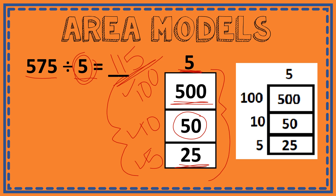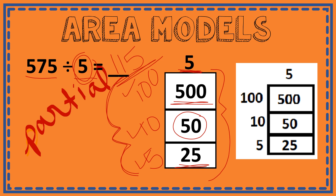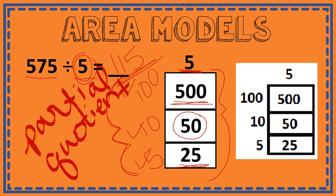Now it's important to know that these numbers have a name — they are called partial quotients. Partial quotients are just that: they are part of your quotient, they're part of the answer. So you're going to be seeing a lot of partial quotients when you are dividing and using long division.